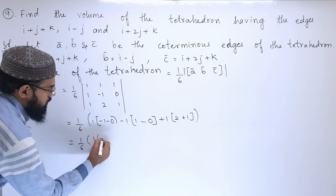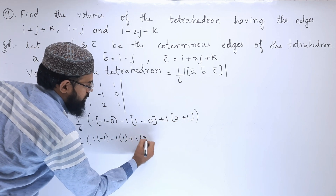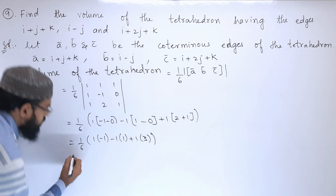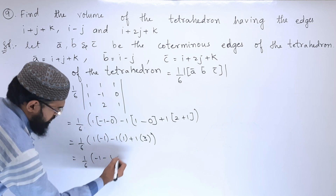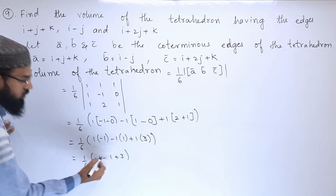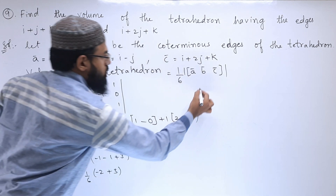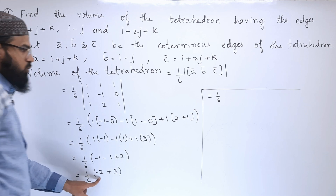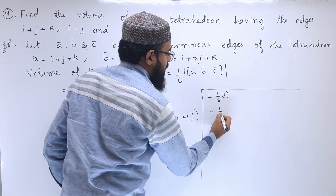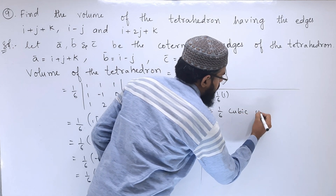Simplifying: minus 1 minus 0 is minus 1, and 2 plus 1 is 3. So we get 1/6 times (minus 1 minus 1 plus 3), which is 1/6 times 1, giving 1/6. Therefore, the volume of the tetrahedron is 1/6 cubic units.